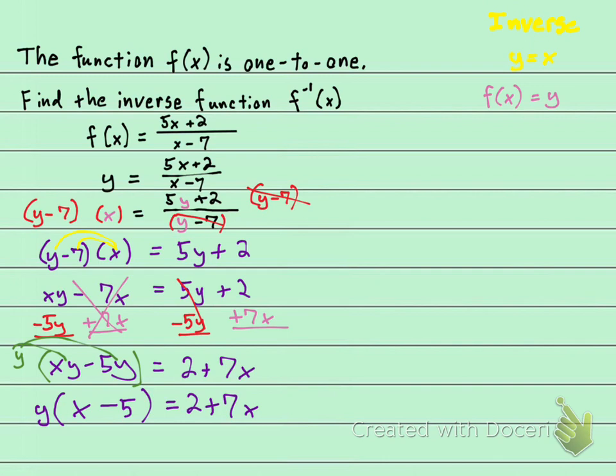One more step. Let's divide both sides. Let's divide out this x minus 5. And you can see that these two cancel. And I'll divide this side by x minus 5. So here's what I have.